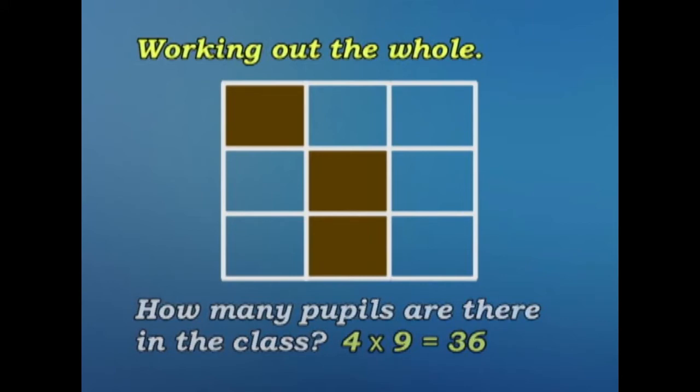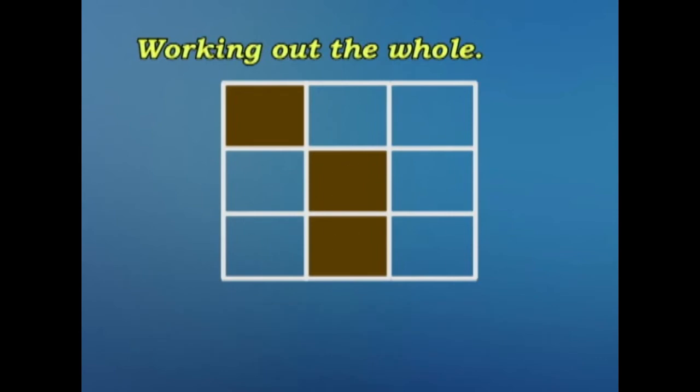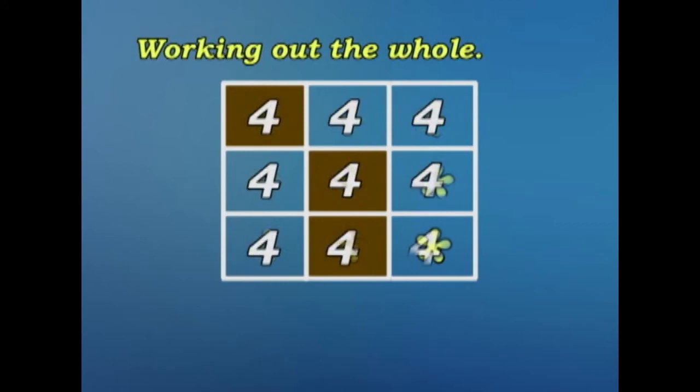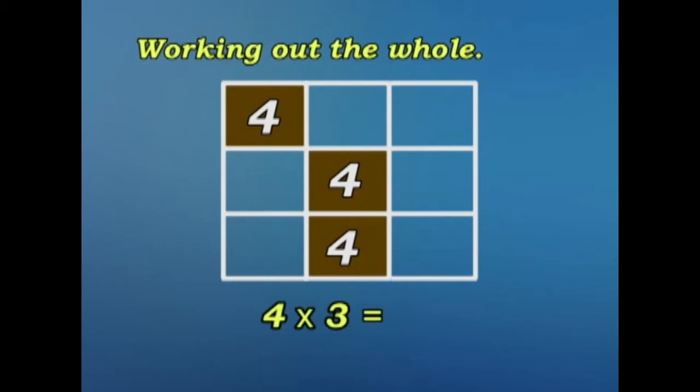Let me summarize that for you. There are 9 fractions. This means there are 9 equal parts. 3 fractions are shaded. If each fraction represents 4 pupils, then the shaded fractions represent 3 times 4, that's 12 pupils.